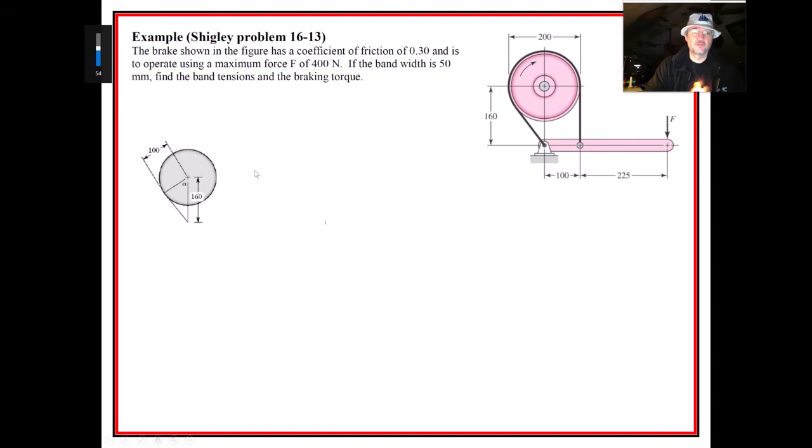The angle of wrap is one of the main things we look at. With the provided information, we notice the radius is 100 millimeters and the distance from the center to this pin is 160, so we're able to get that angle. I'm calling it alpha, right here, 51.32 degrees.